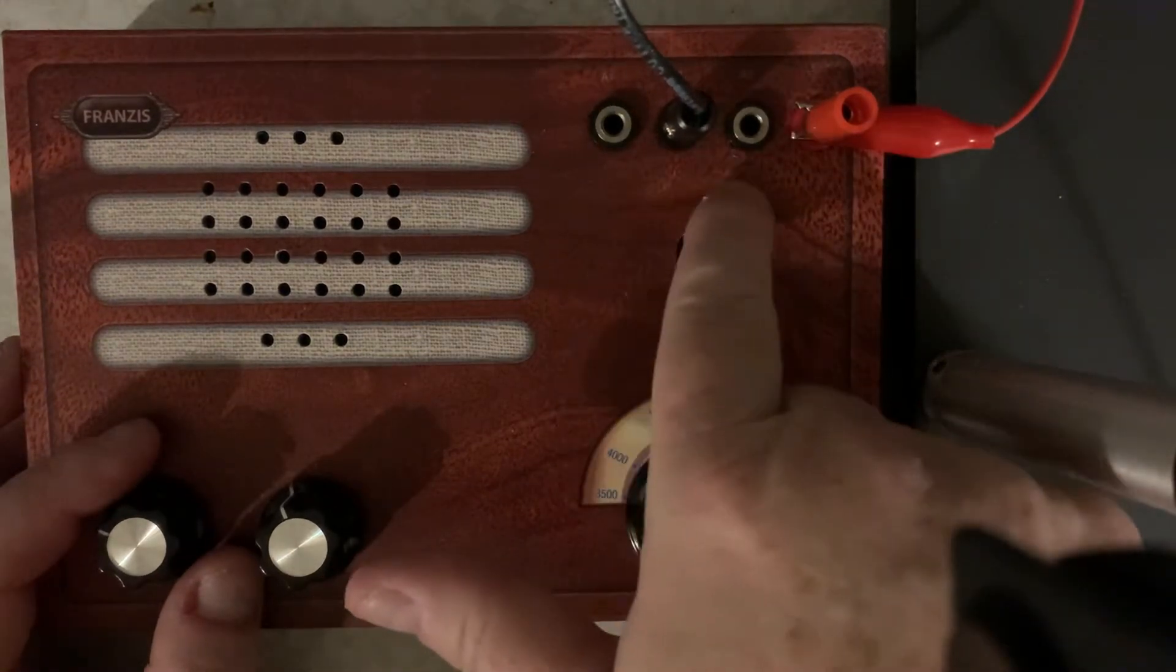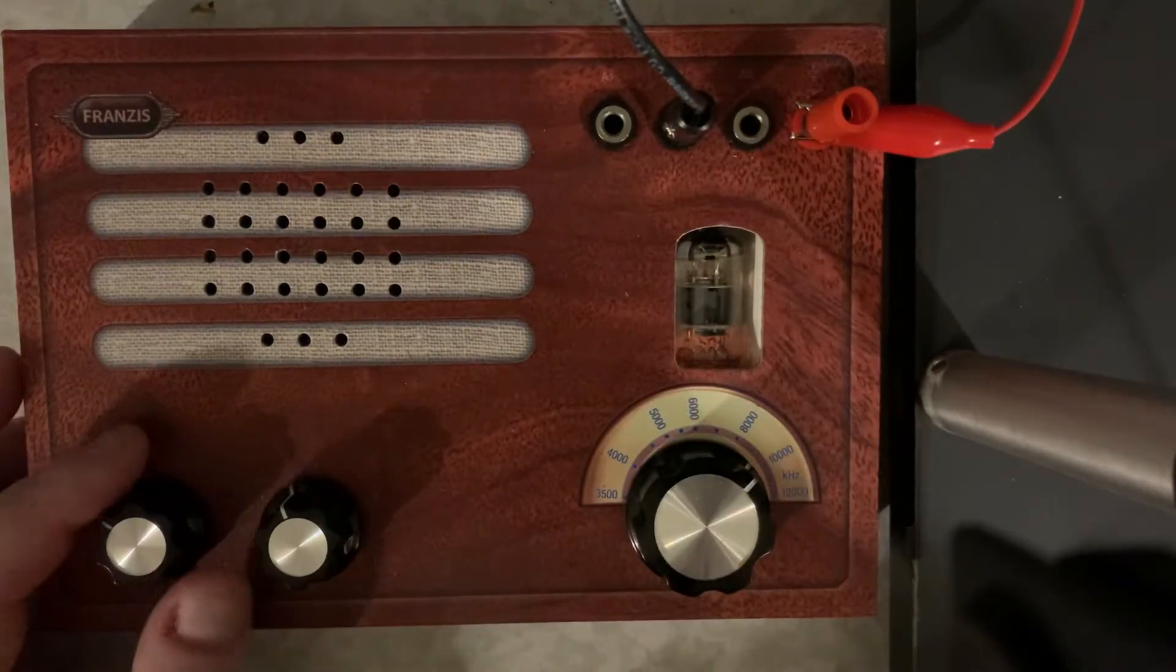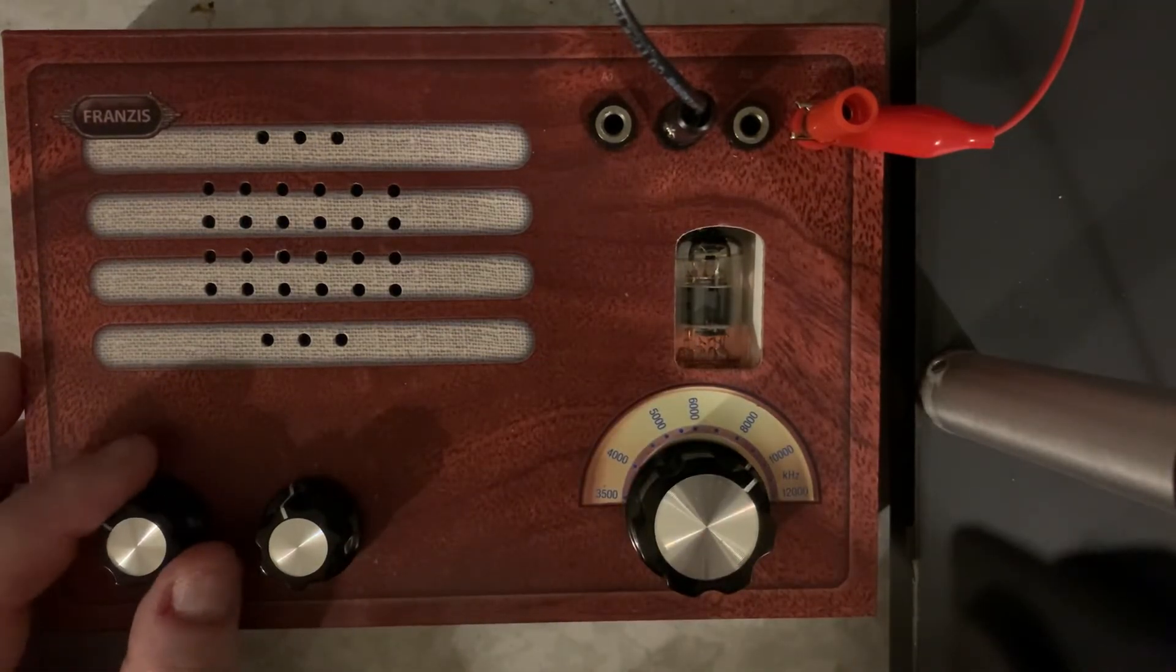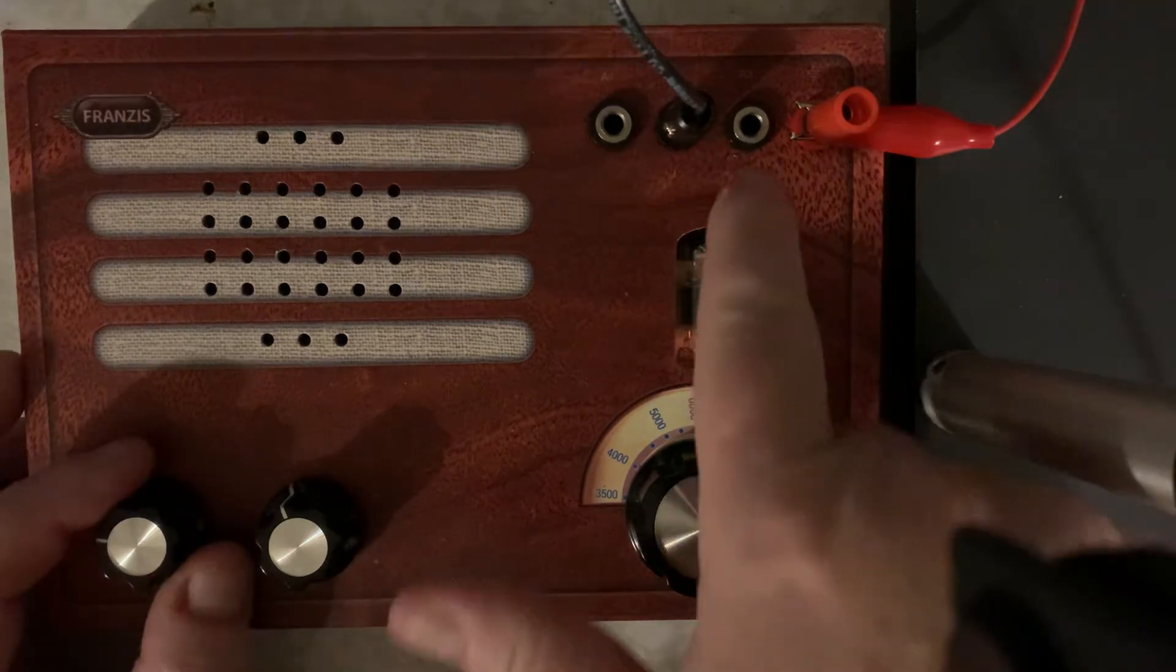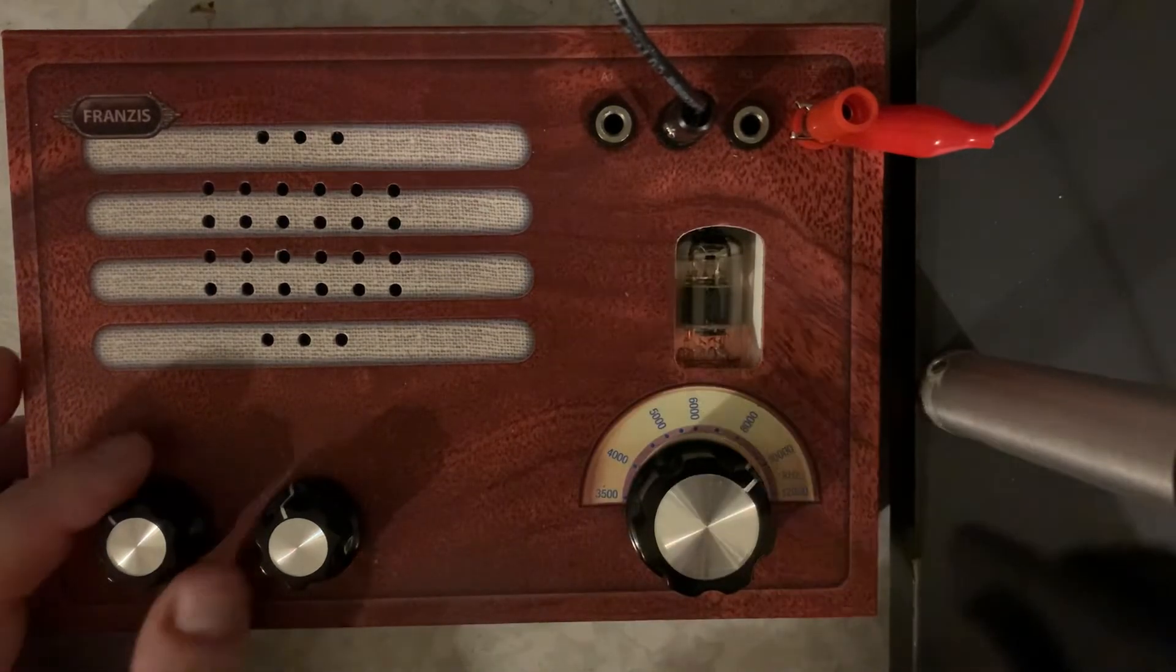Now this particular radio has three positions for the antenna. This A1 position is the highest gain. The A2 is middle. And the A3 position is the least amount of gain. So I have it kind of down the middle right now.